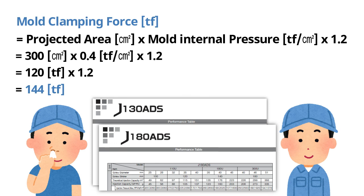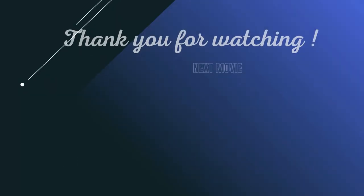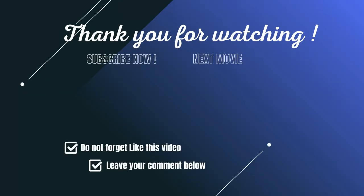Here is the result of calculation. It's 144 ton force, so we need to choose J180 ADS, right? Next we will choose the injection unit.